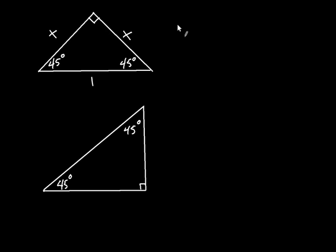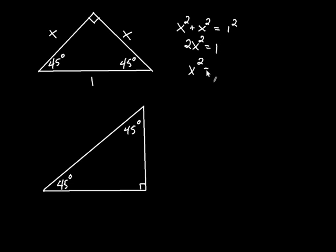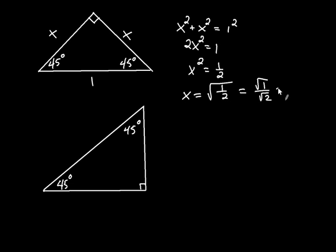Using the Pythagorean theorem, x squared plus x squared — the sum of the squares of the two sides — is equal to the square of the hypotenuse, which is 1 squared. That gives 2x squared equals 1, so x squared equals one-half. Using the square root property and noting that the length is positive, x equals the square root of one-half, which is 1 over the square root of 2. Rationalizing the denominator by multiplying top and bottom by root 2, x equals the square root of 2 over 2.